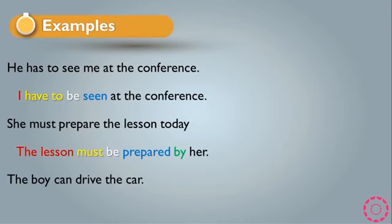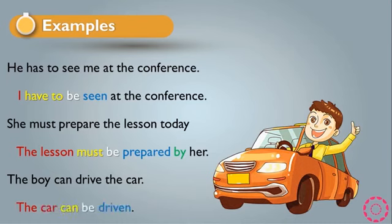Another example: 'The boy can drive the car.' As you can see, we have 'can' as the modal verb and 'the car' as the object. So in passive it becomes 'The car can be driven.' We write 'can' again, then add 'be', and 'drive' becomes 'driven'. So the passive sentence is: 'The car can be driven.' This is all about the modal verb passive.